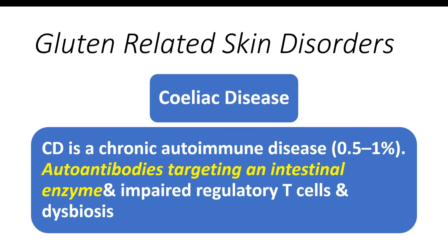Celiac disease is a chronic autoimmune condition triggered by gluten consumption, affecting genetically predisposed individuals of all ages and both sexes. The overall prevalence is approximately 0.5 to 1%. Gluten intake can initiate an immune response leading to bowel inflammation and tissue damage, involving specific T cell populations, pro-inflammatory cytokines, autoantibodies targeting an intestinal enzyme, and impaired regulatory T cells. Changes in the gut microbiome — dysbiosis — may also play a significant role in celiac disease pathogenesis, though it remains unclear whether this dysbiosis is a result or a cause of celiac disease.